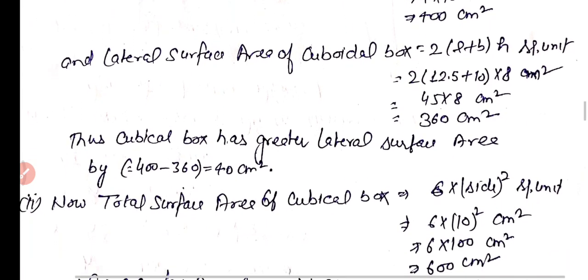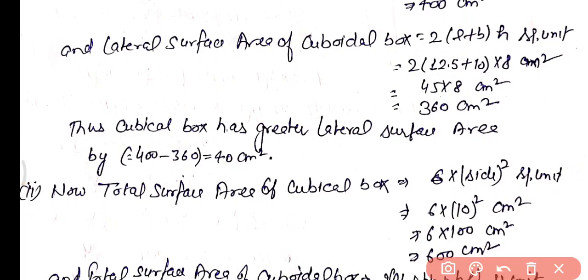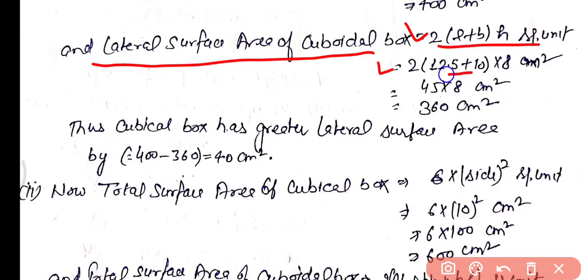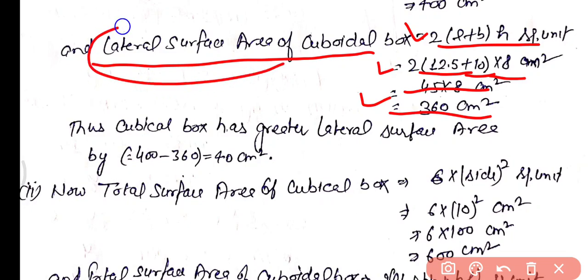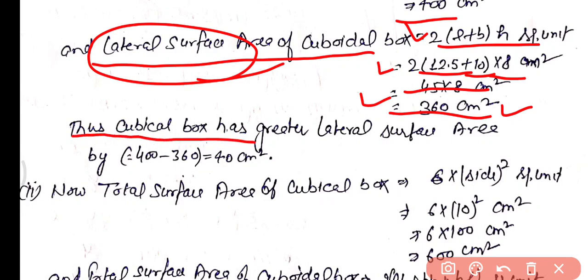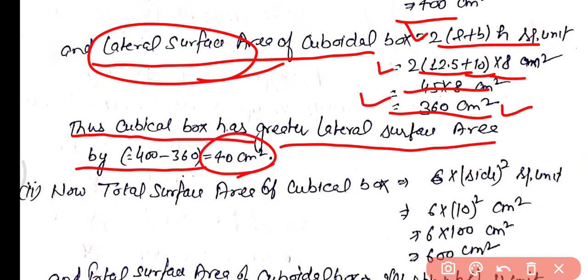Lateral surface area of the cuboid box = 2(l + b) × h = 2 × (12.5 + 10) × 8 = 360 cm². The cubical box has a lateral surface area of 400 cm² and the cuboid box has 360 cm², so the cubical box has greater lateral surface area by 400 − 360 = 40 cm².